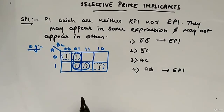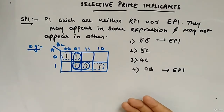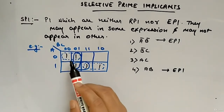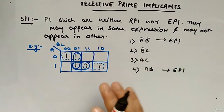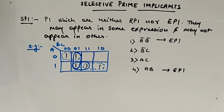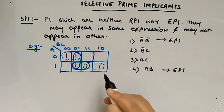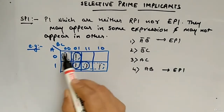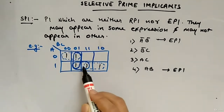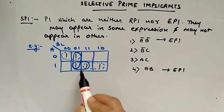That's the reason it is an essential prime implicant, which is A-bar B-bar — so EPI. Now if you look at the other two groups, these are selective prime implicants. Why? Because they are neither redundant prime implicants nor essential prime implicants. This min term has two options, this min term has two options, and this min term also has two options.